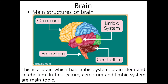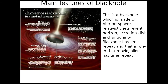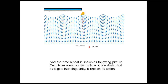This is a brain, which has a limbic system, brain stem, and cerebellum. In this lecture, the cerebellum and limbic system are the main topics. This is a black hole, which is made of a photosphere, relativistic jet, event horizon, accretion disc, and singularity. The black hole has time repeat, and that is why in that movie the alien has time repeat.